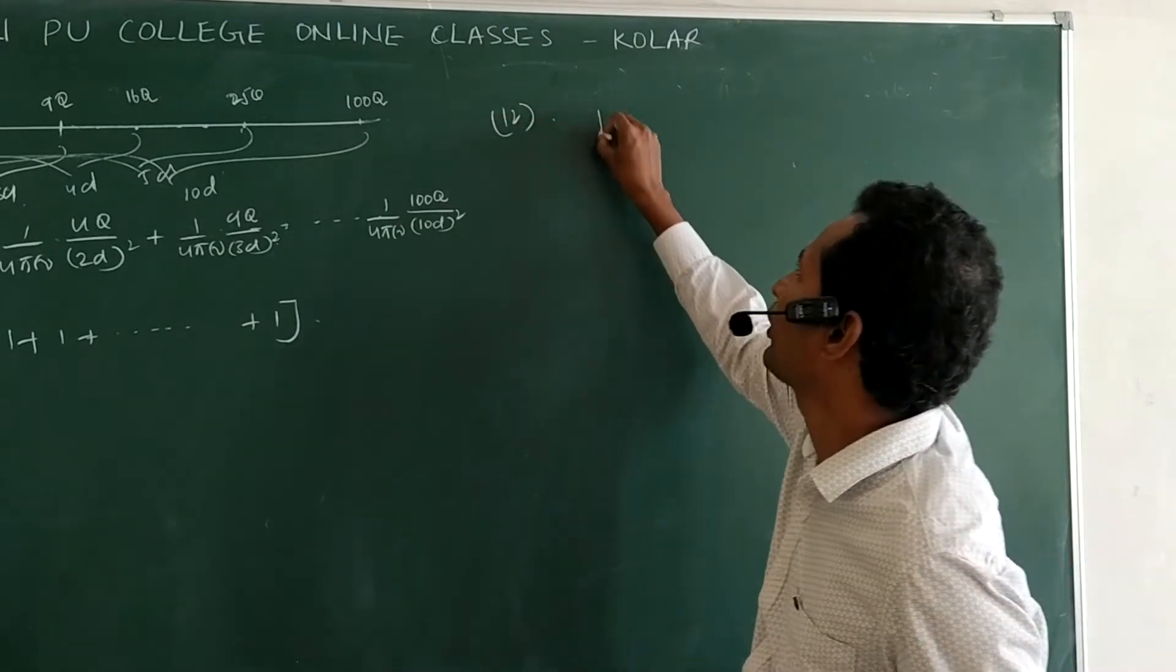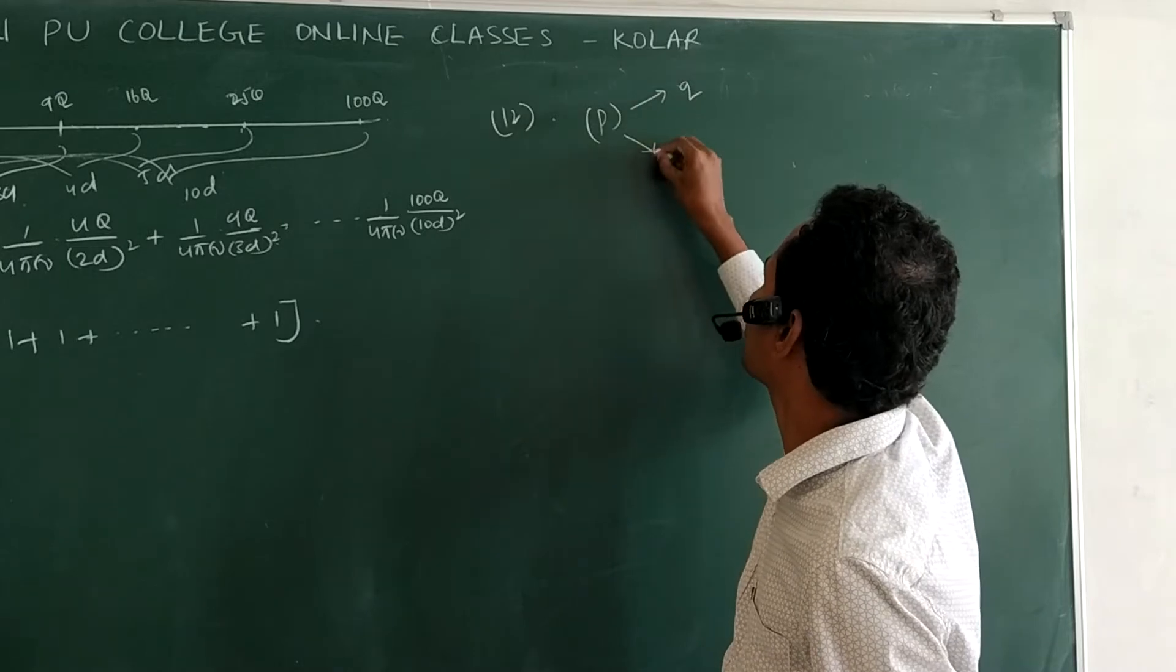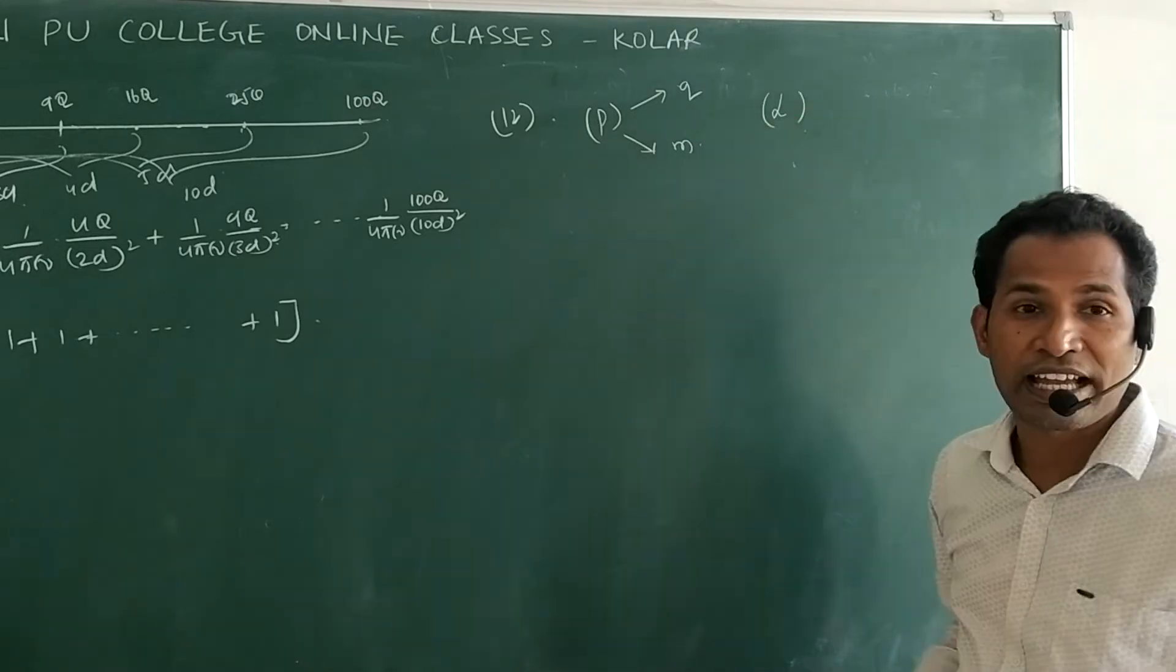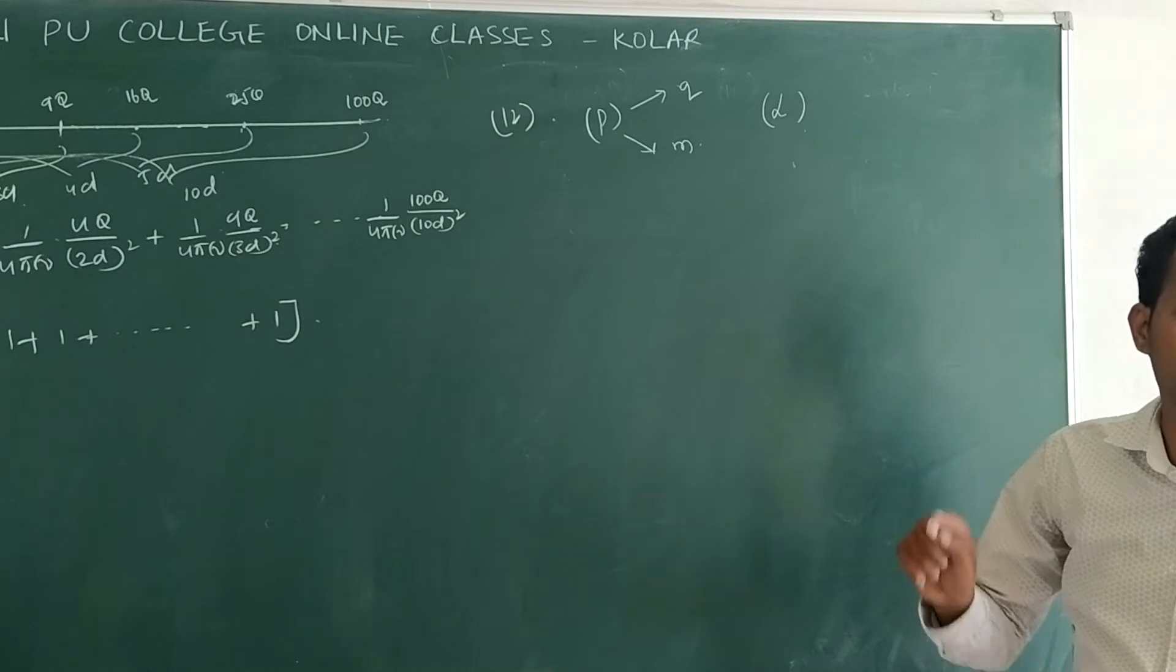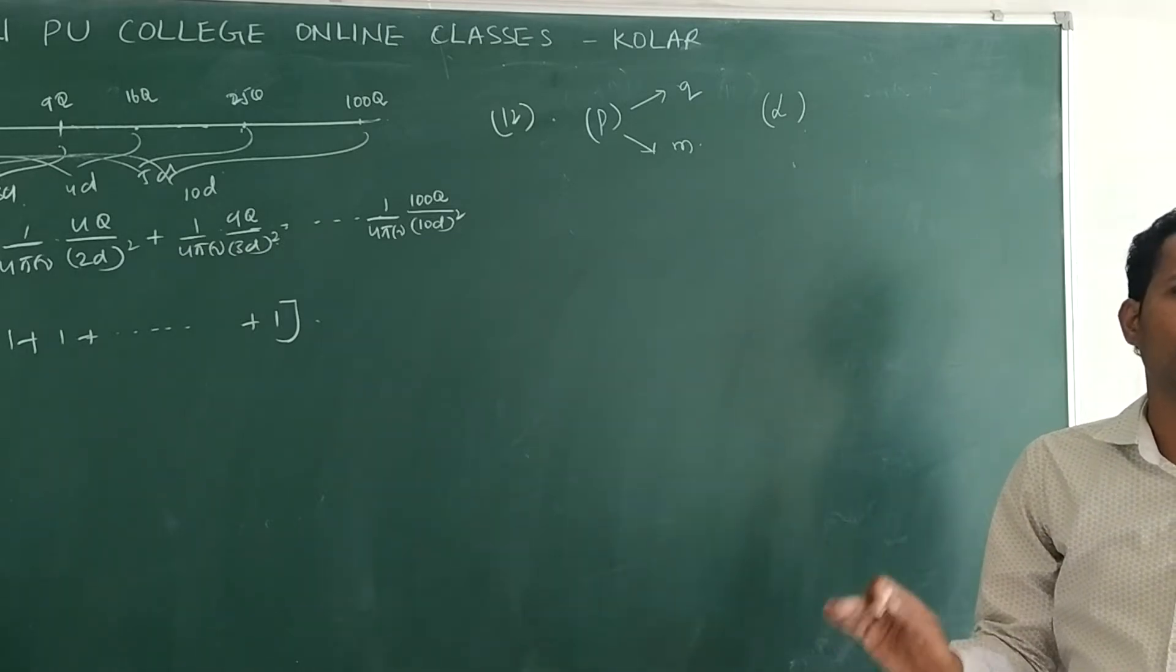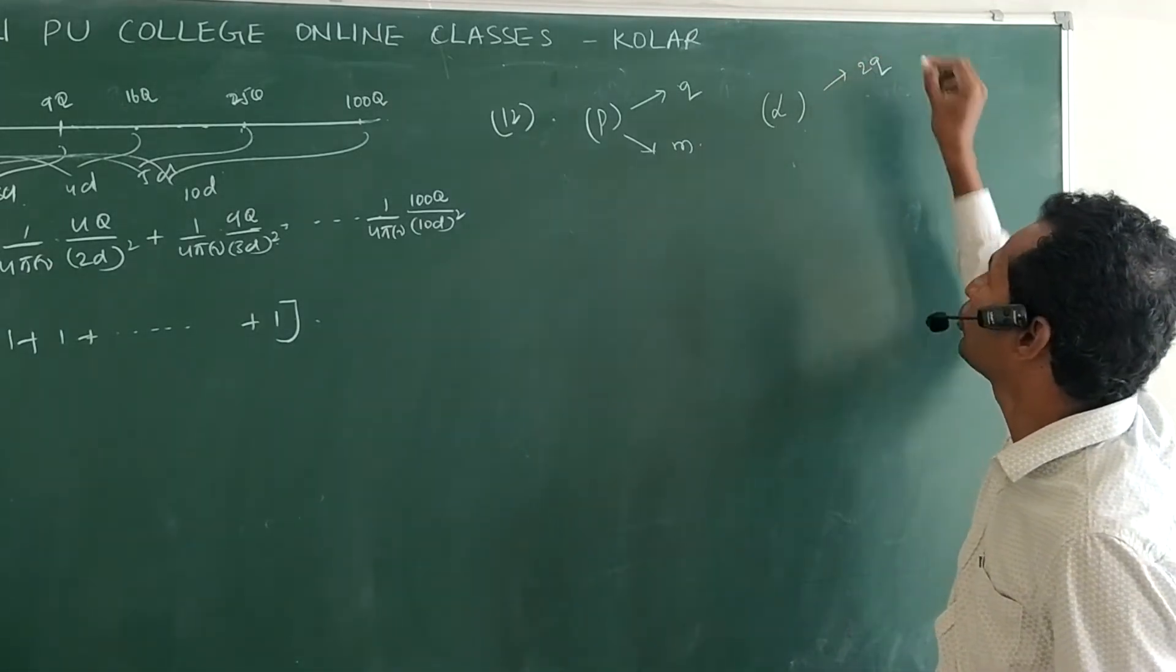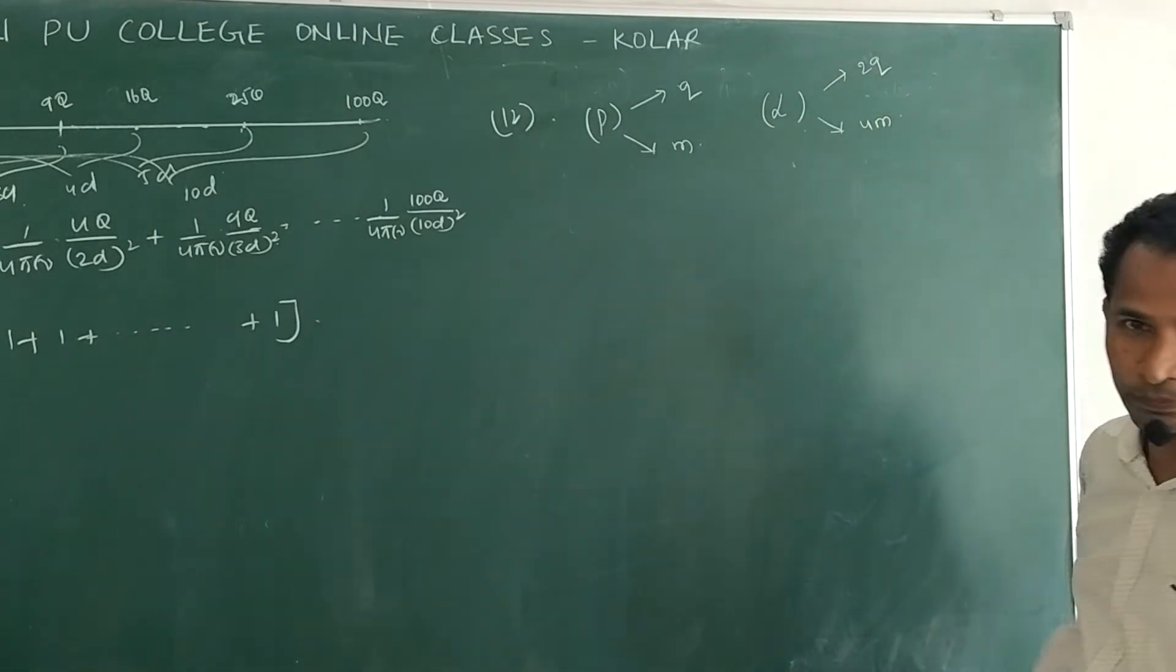Let us say proton, this proton charge you take as Q, mass as M. Now alpha particle. Alpha means this is ionized helium. Remember this point. Alpha particle means ionized helium, means there is no electrons in the alpha particle. Only protons are there. So then alpha charge, let us say 2Q and mass is 4M. Clear.